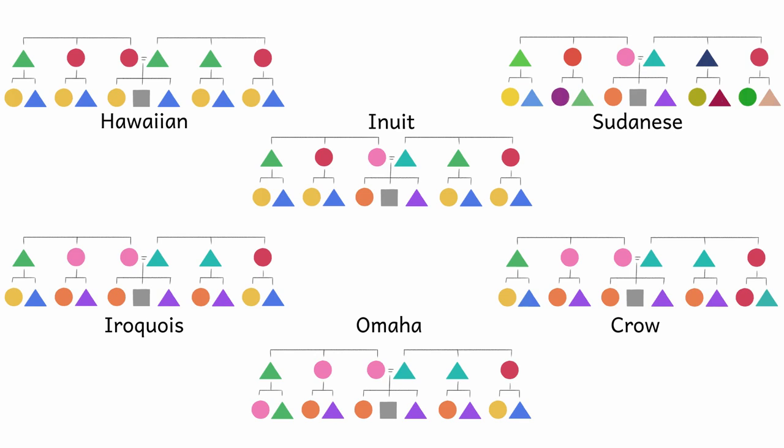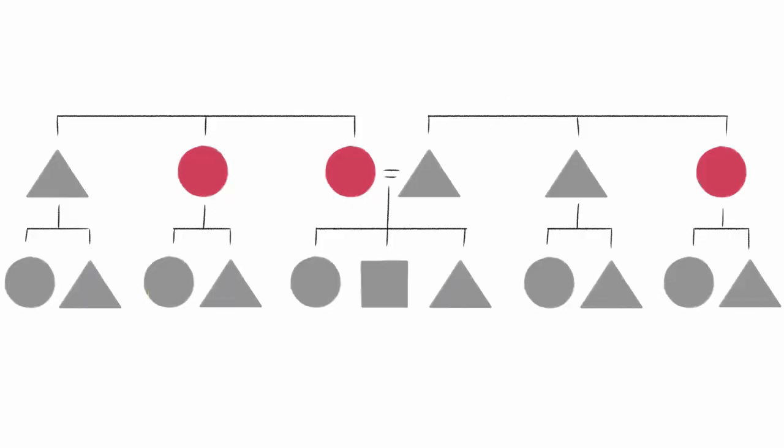Let's start with the simpler system, Hawaiian. It classifies all relatives by gender and generation. So all women of the generation preceding you are your mother, and all women of the same generation as you are your sister. That's it.